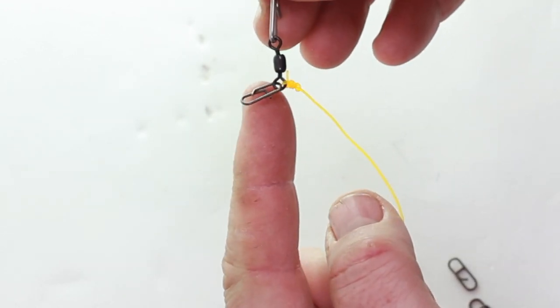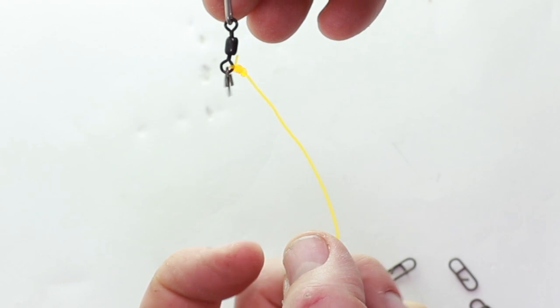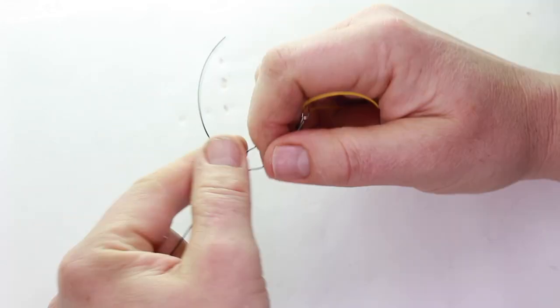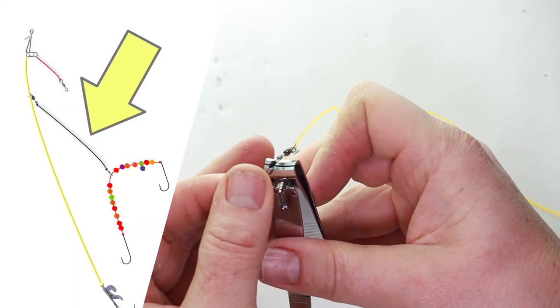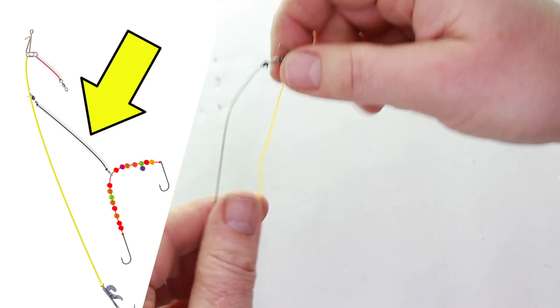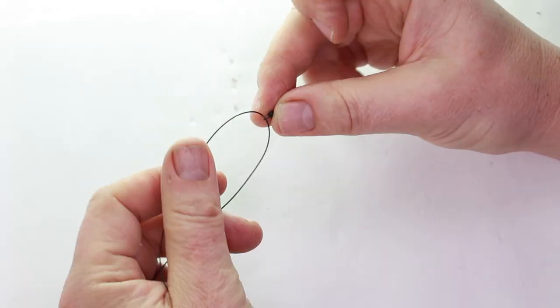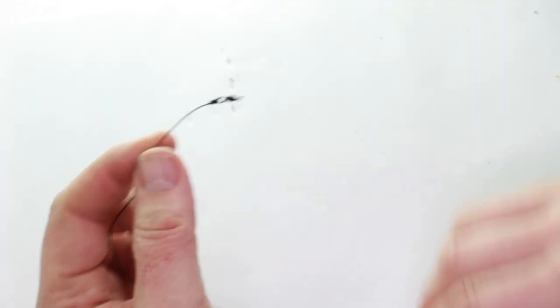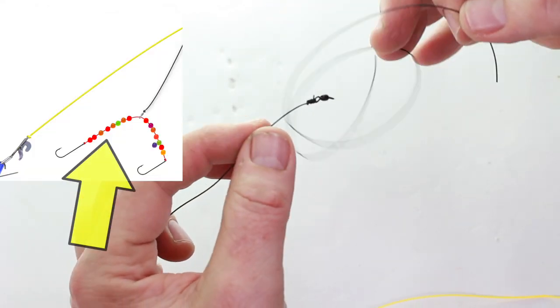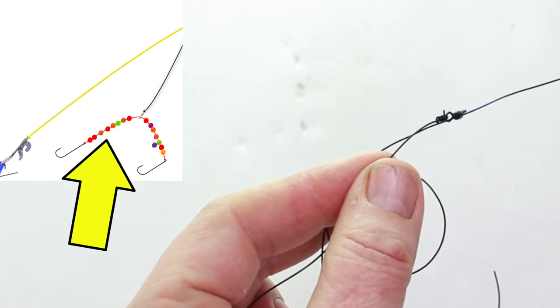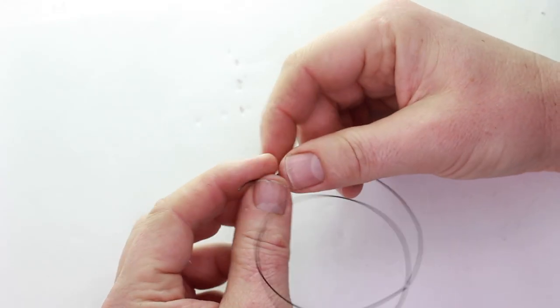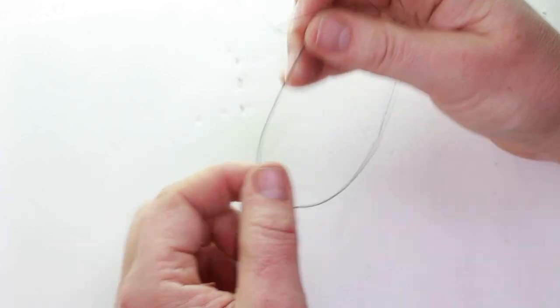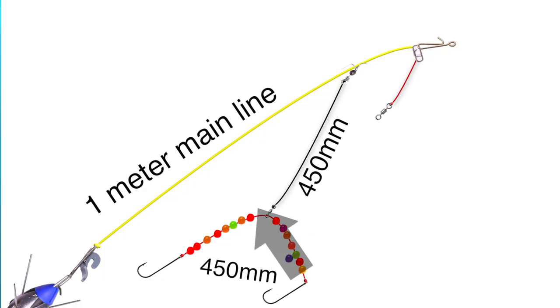So clip that on to the bottom of the swivel there, and then you're going to tie on your Amnesia 25 pound line. That's the snood going down to the hook snood - it's going to be a wishbone hook snood. Take a look at the video at the end of this - it shows you how to make your hook snoods all the same length. So basically you've got a one meter trace.